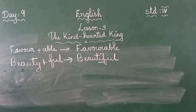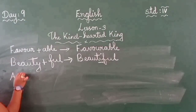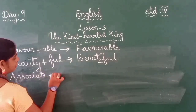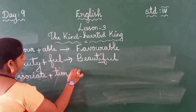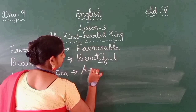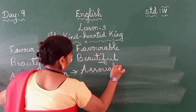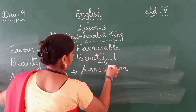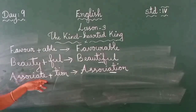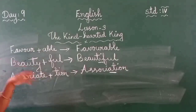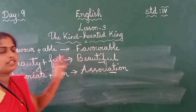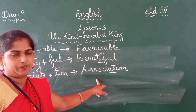Next word: associate. Associate plus the suffix -tion, we get the new word association. Here you can see the -e is dropped and we get association.